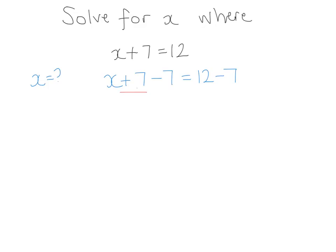Now plus 7, minus 7, they're opposites and we'll cancel down and when they cancel down that'll just leave the x on its own. And 12 take away 7 is 5.